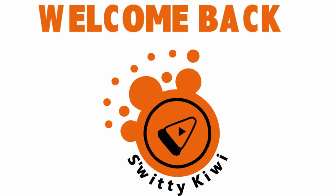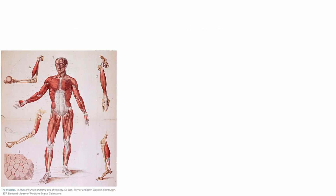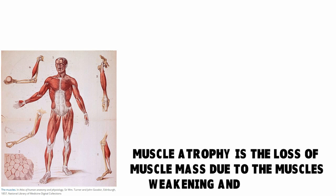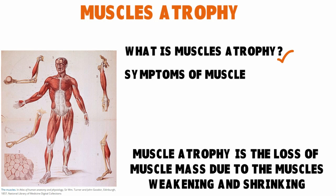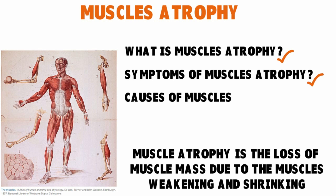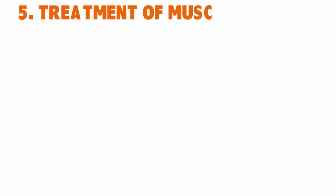Welcome back, folks, to another edition of Sweetie Kiwi. We're still continuing our conversation around what makes muscles waste away. Today's show covered the definition of muscle atrophy — muscle wasting is a loss of muscle mass due to the muscles weakening and shrinking — along with various factors that contribute to it. We've discussed the definition, symptoms, causes, and diagnosis of muscle atrophy, and now we want to talk about the treatment.